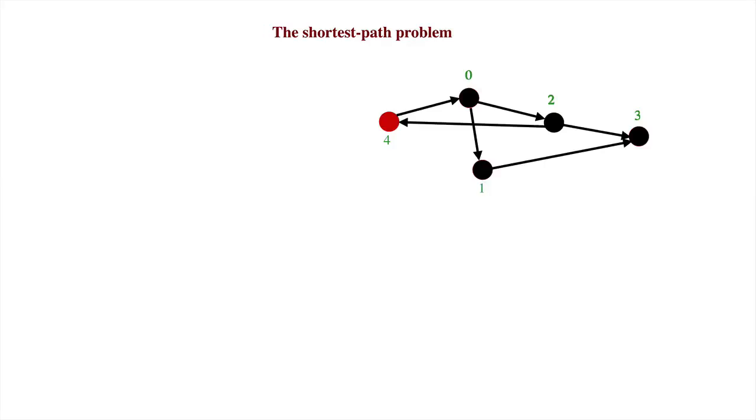We describe the shortest path problem. We have a graph with n nodes for some n greater than 0. The nodes are given distinct numbers in green in the range 0 through n minus 1.